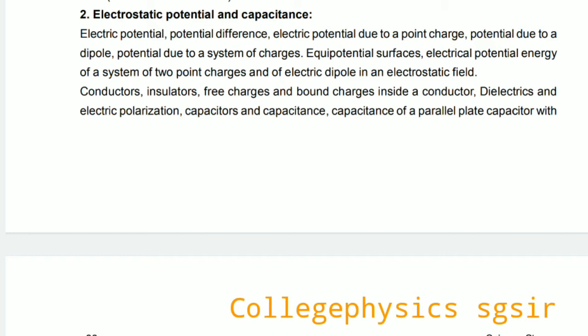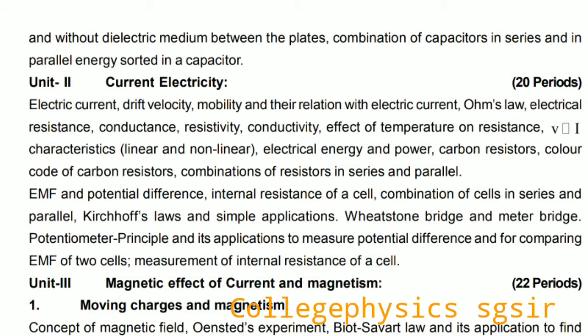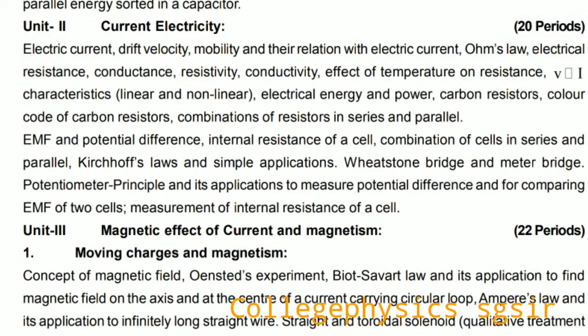We also discuss conductors, insulators, free and bound charges inside a conductor, dielectrics and electric polarization, capacitor and capacitance, capacitance of a parallel plate capacitor with and without dielectric medium between the plates, combination of capacitors in series and parallel, and energy stored in a capacitor. Unit 2 is Current Electricity.